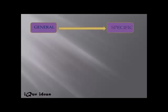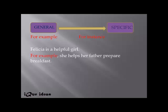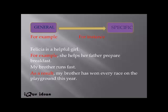Conjunctions also help us understand how the main idea is presented and what specifics are associated with it — moving from general to specific. For this we use 'for example' and 'for instance.' Example: 'Felicia is a helpful girl. For example, she helps her father prepare breakfast.' The second sentence details how she is helpful. Similarly: 'My brother runs fast. As a result, my brother has won every race on the playground this year' — expressing specific achievements linked to the general idea.